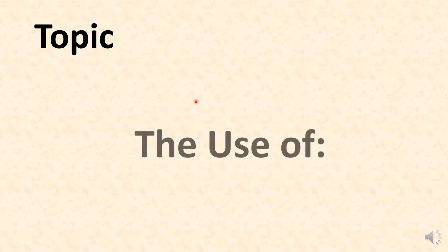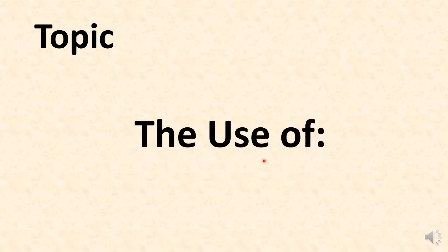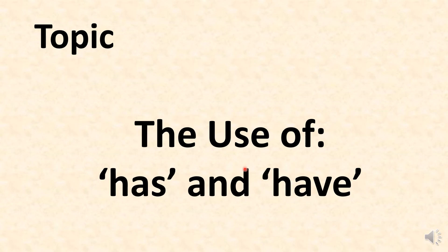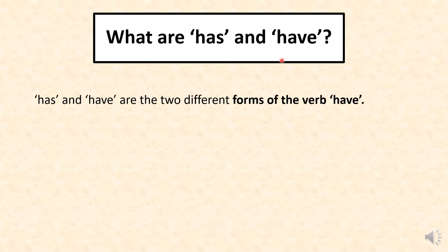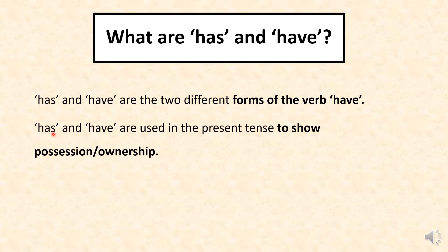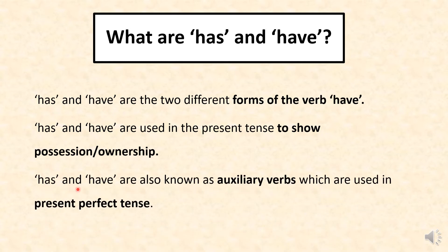Here is our today's topic. I shall be telling you about the use of has and have. Has and have are the two different forms of the verb have. They are used in the present tense to show possession or ownership, and they are also known as auxiliary verbs used in the present perfect tense.